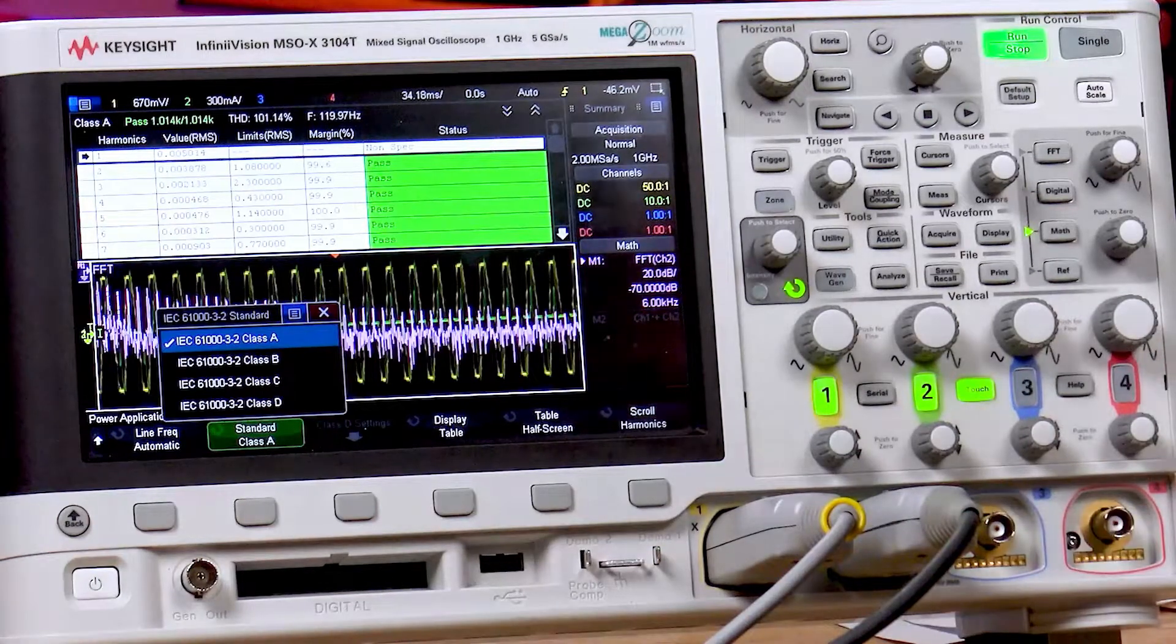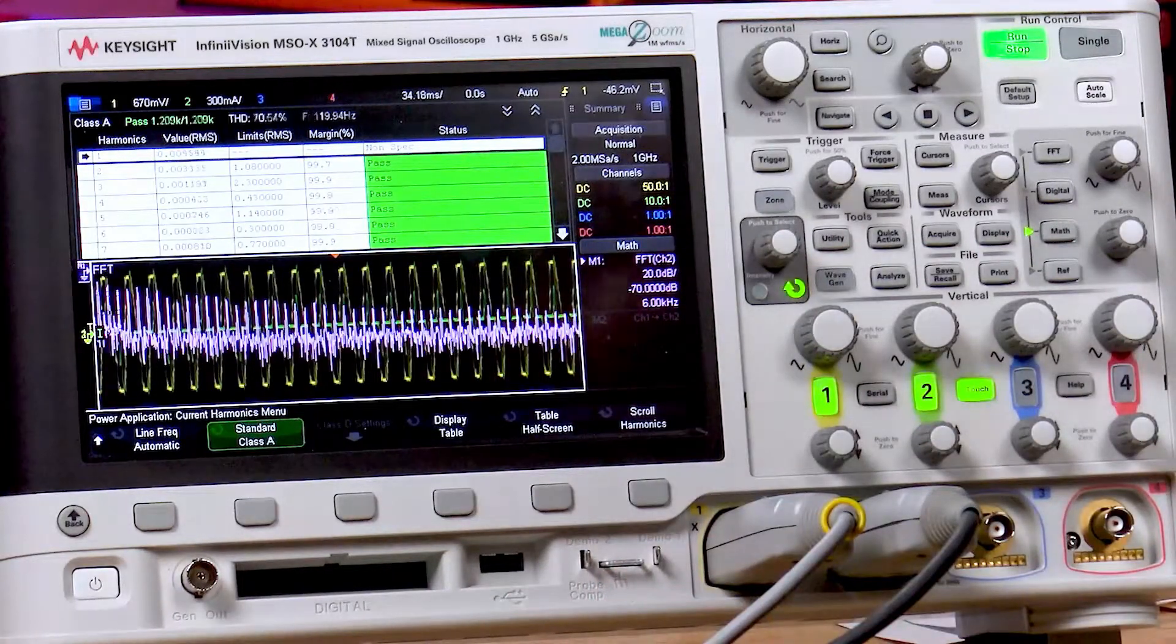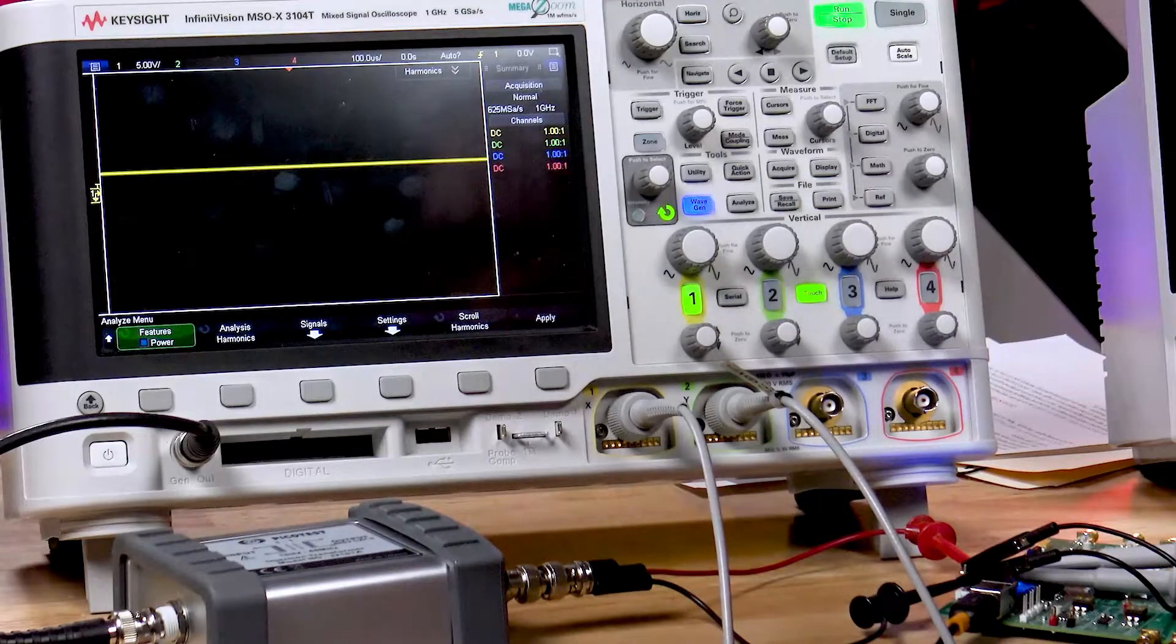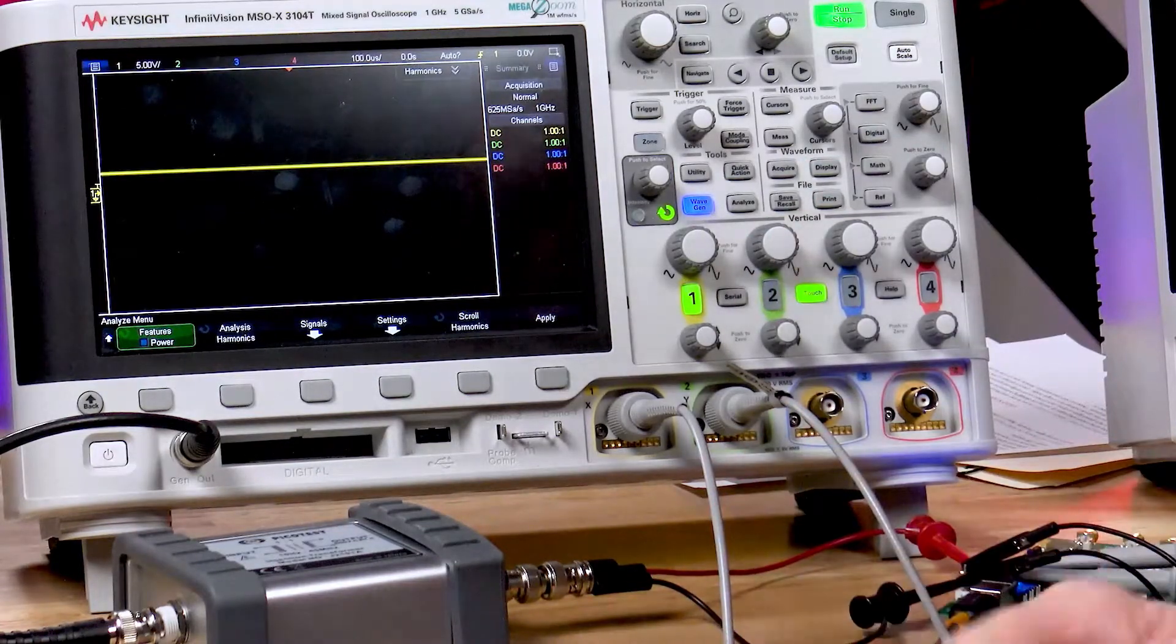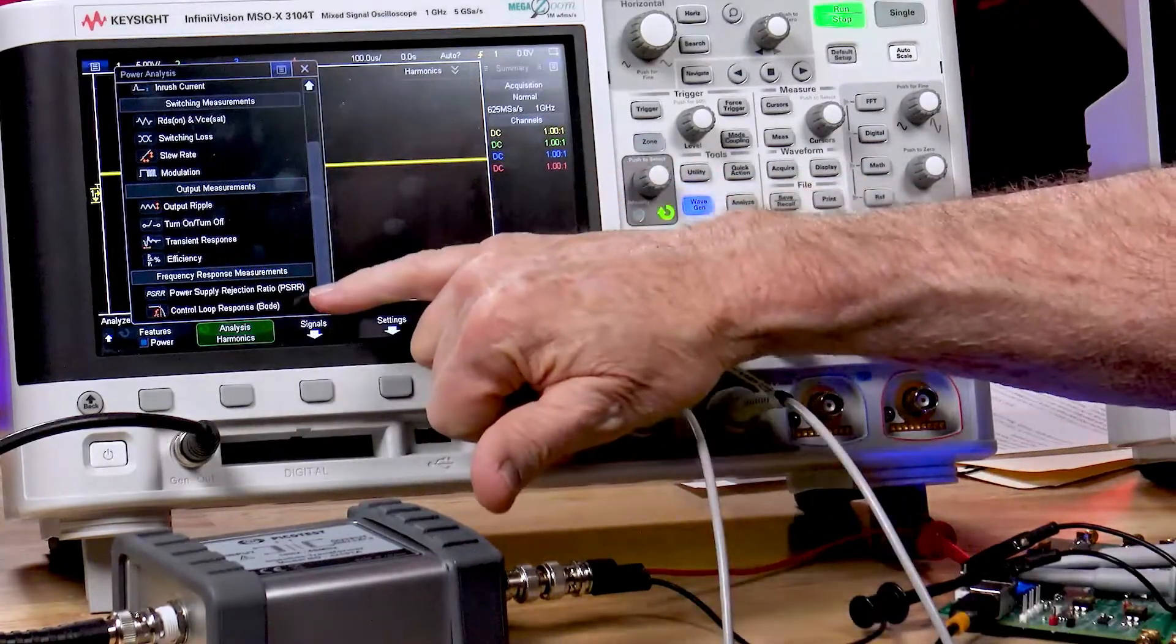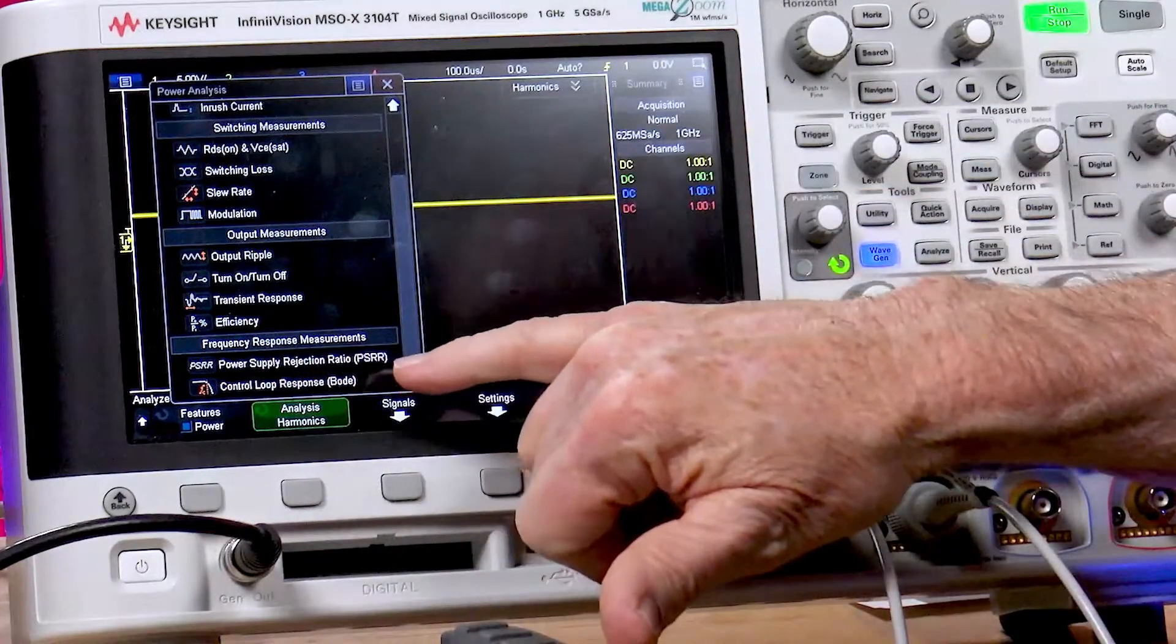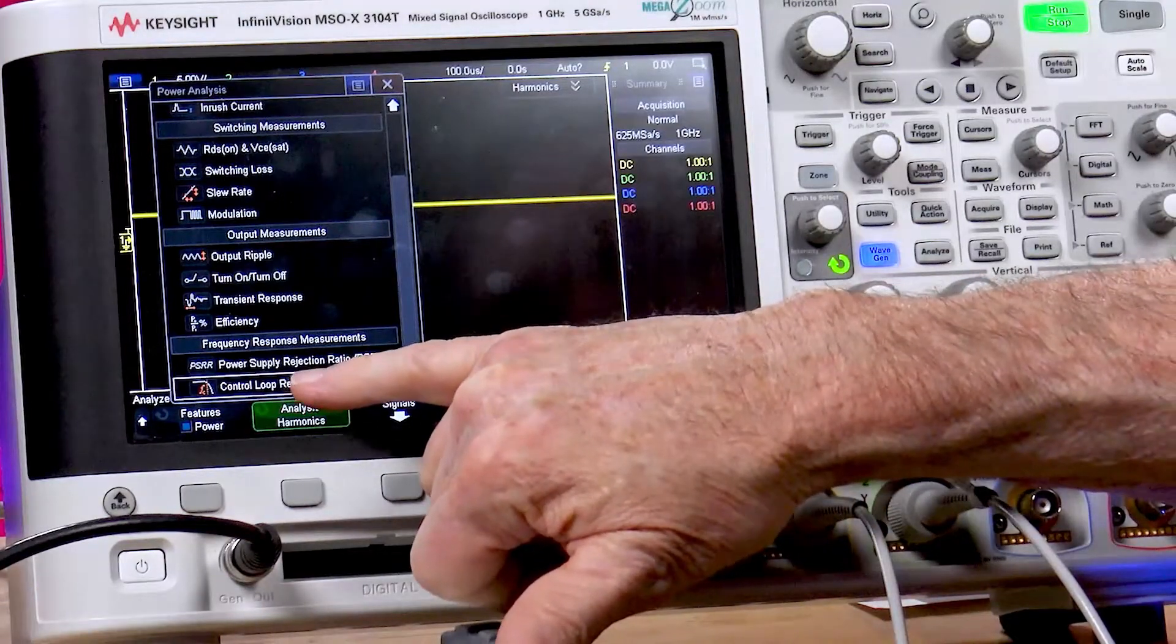Now, we don't have time to do a demonstration of all the other power measurements, but let's do a control loop response test now. I'm probing a DC to DC converter, probing at the DC output. Let's select the control loop response measurement. Notice down here in the bottom, we have two frequency response measurements, which are basically Bode plots: power supply rejection ratio and control loop response. We'll select control loop response.